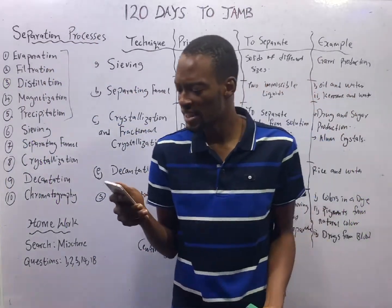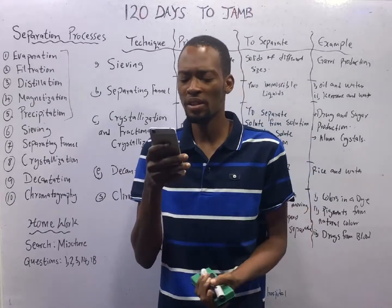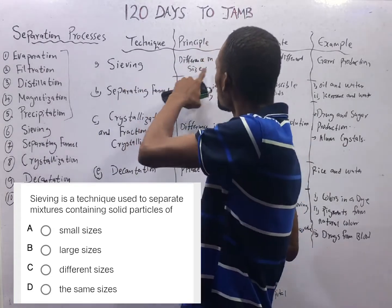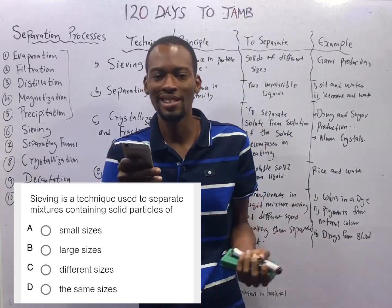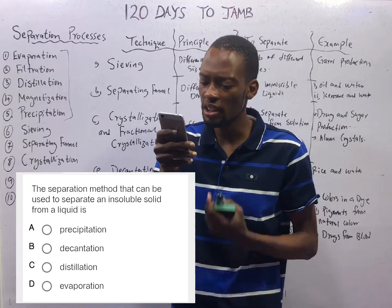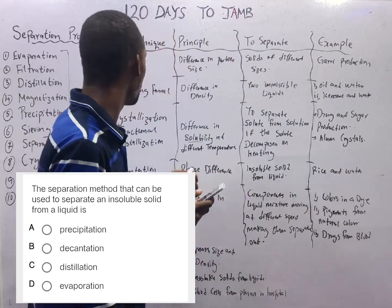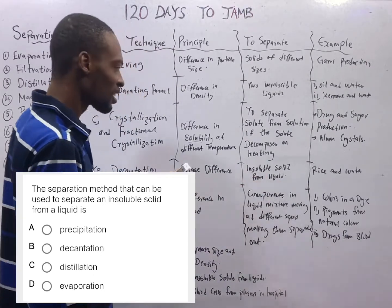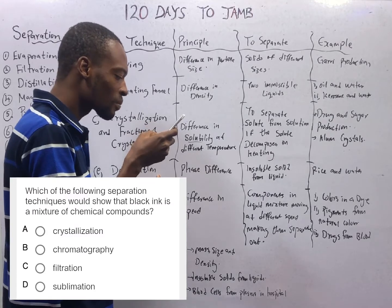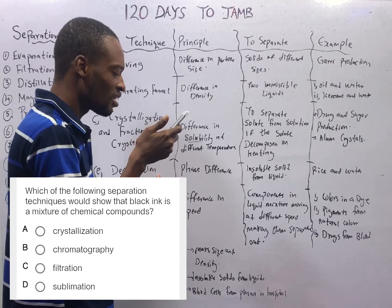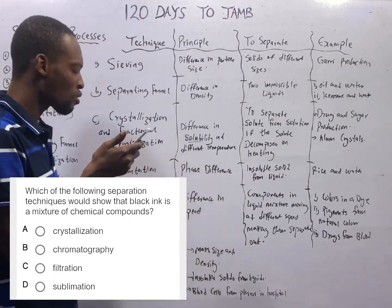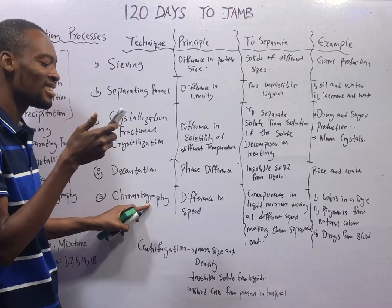Let's take a look at questions from the Flash Nenas Jam application. The first question: sieving is a technique used to separate mixtures containing solid particles of — different sizes. Option C is the correct option. The separation method that can be used to separate an insoluble solid from liquid is decantation. Example: rice and water. Which of the following separation techniques would show that ink is a mixture of chemical compounds? When you separate ink, you see different colored components, so we employ chromatography. Chromatography shows that black ink is a mixture of chemical compounds.